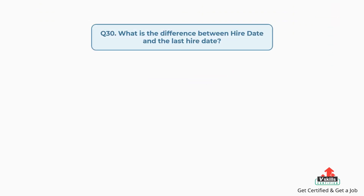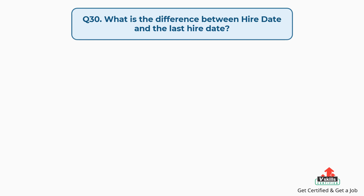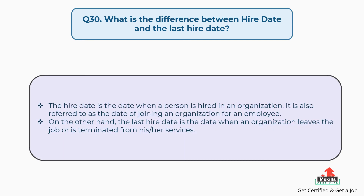Question number 30: what is the difference between hire date and the last hire date? The answer is, the hire date is the date when a person is hired in an organization, also referred to as the date of joining. On the other hand, the last hire date is the date when an employee leaves the job or is terminated from his or her services.